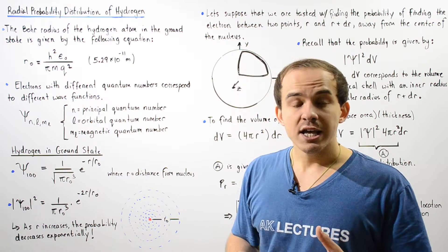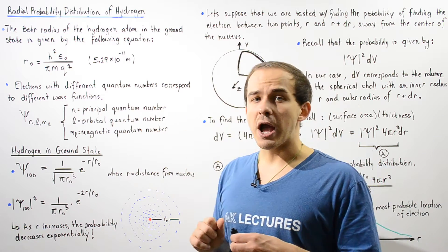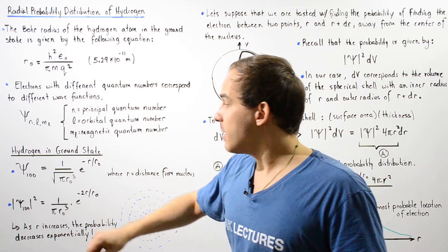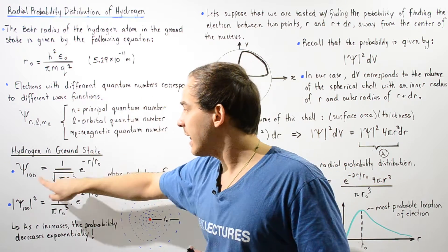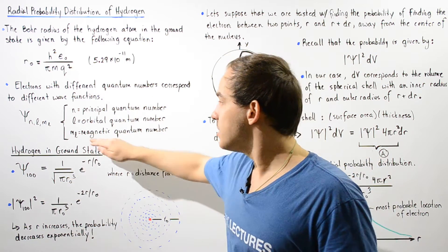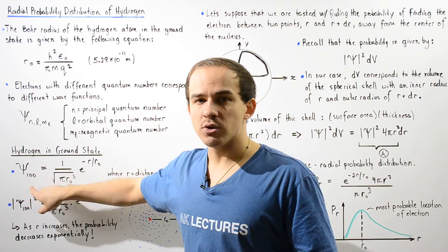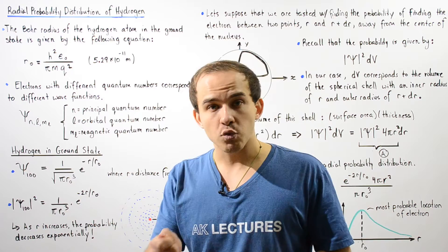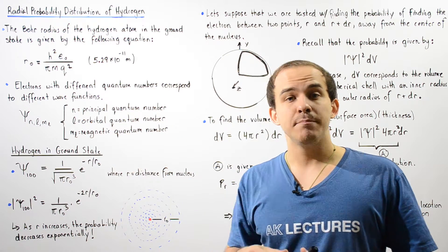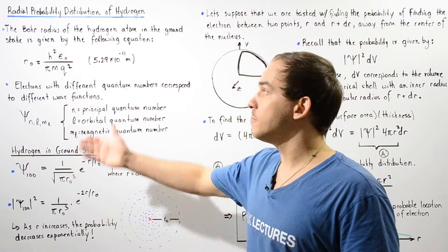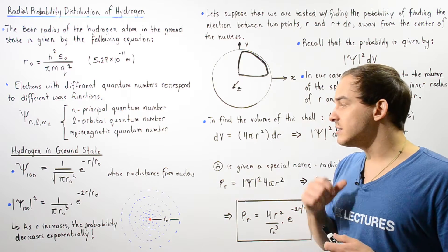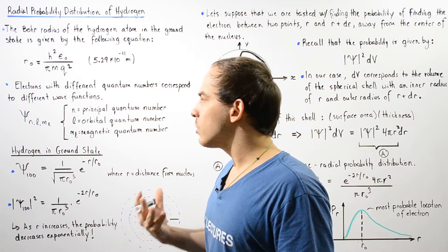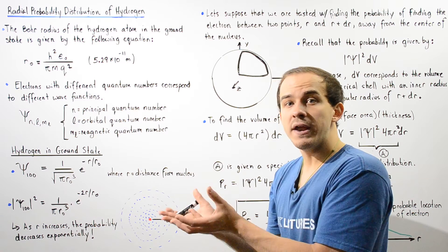Now let's define the wave function for the electron in the ground state of the hydrogen atom. This corresponds to a principal quantum number n of 1, an orbital quantum number l of 0, and a magnetic quantum number m-l of 0. So psi-1-0-0 is equal to 1 divided by the square root of pi multiplied by the Bohr radius r-naught cubed, multiplied by e to the power of negative r divided by the Bohr radius, where r is the distance from the center of our nucleus.